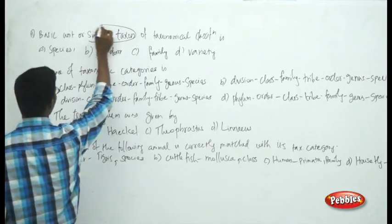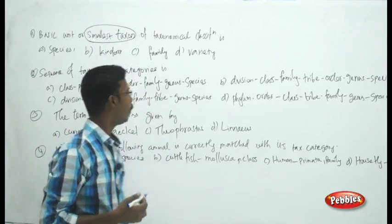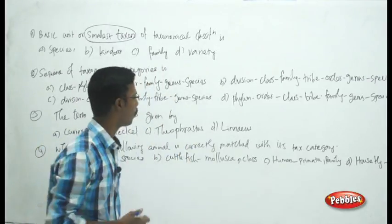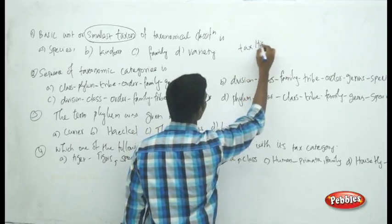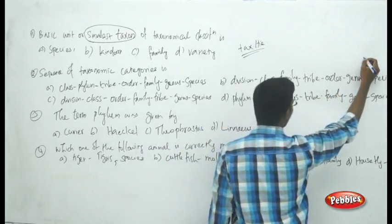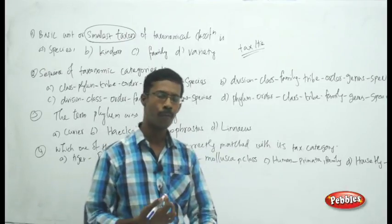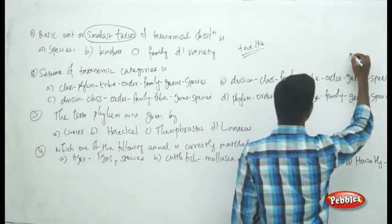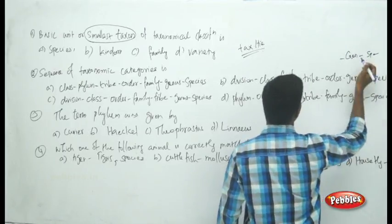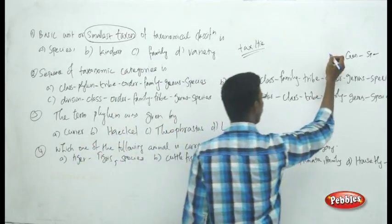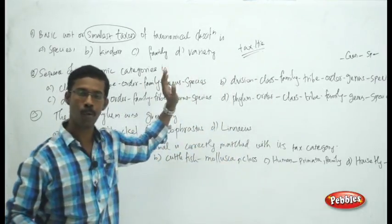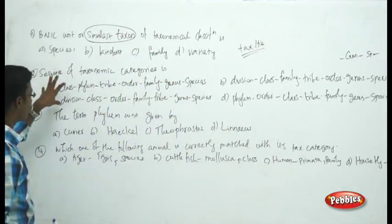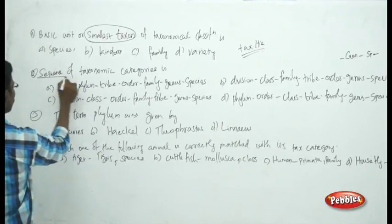The question is about the smallest or basic unit of taxonomy. We have seen several levels of the taxonomical hierarchy. Whatever the animal or living being, they are given two different words in binomial nomenclature — the first word represents the genus and the second word represents the species. Genus and species are grouped upward, and the second question asks about the sequence of taxonomic categories.